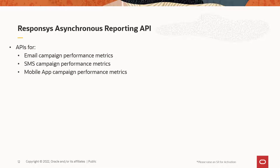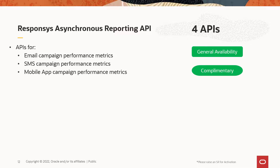Asynchronous Reporting API is used for aggregated reporting data that enables you to pull campaign performance metrics for all the Responses channels: email, SMS, and mobile apps. They are recommended for API-based reports.